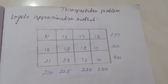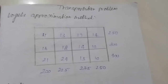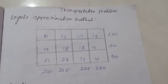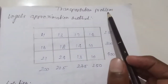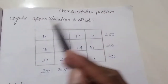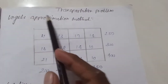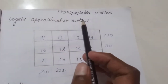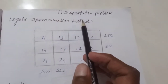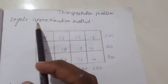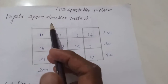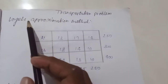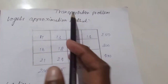Hi friends! Today we are going to talk about the transportation problem in operations research. This is Vogel's Approximation Method. In the previous video, we talked about the Least Cost Method. Now we are going to talk about Vogel's Approximation Method.